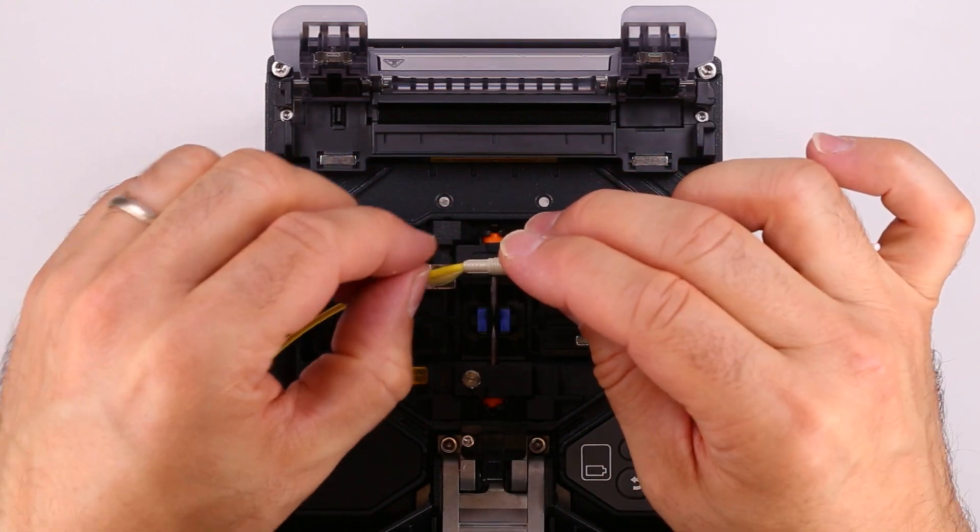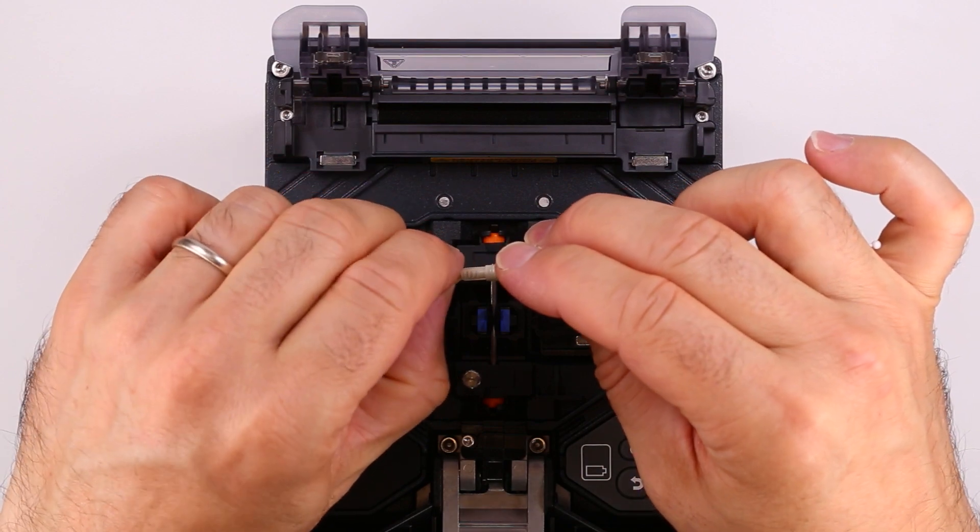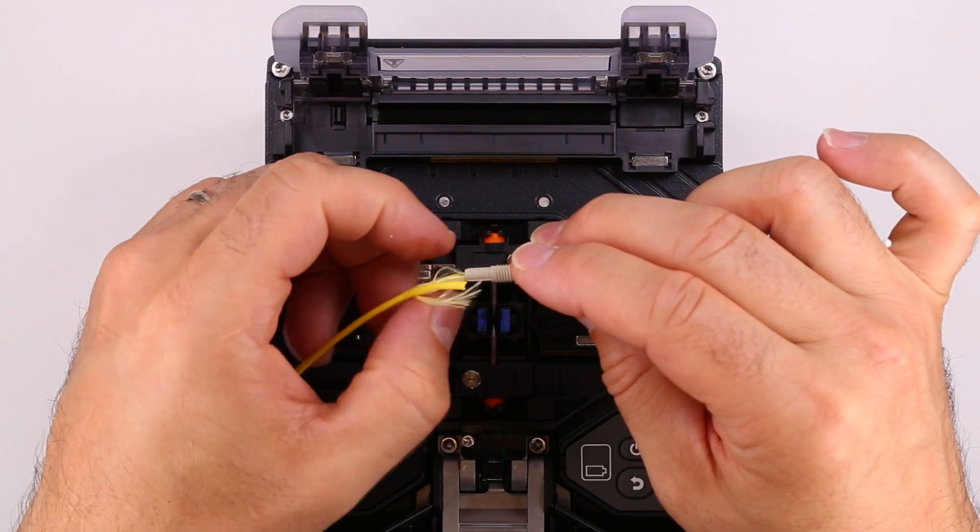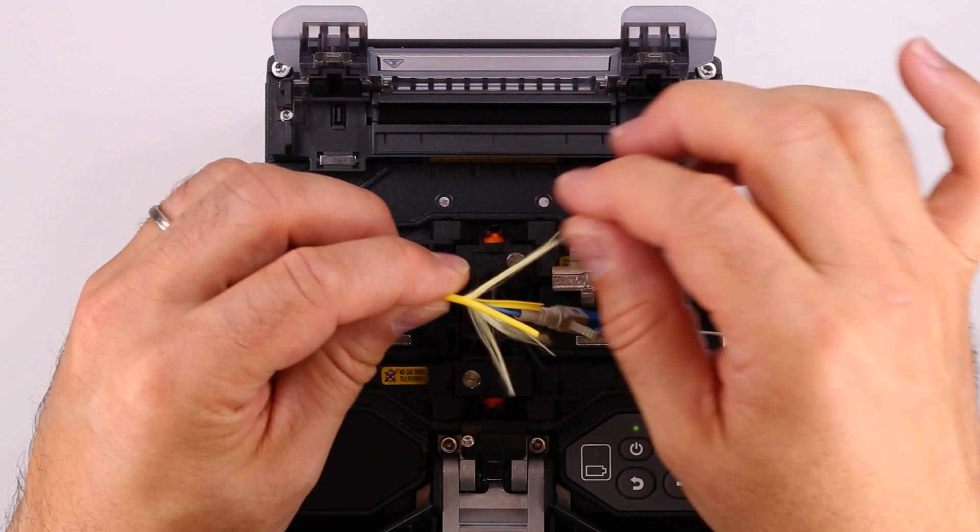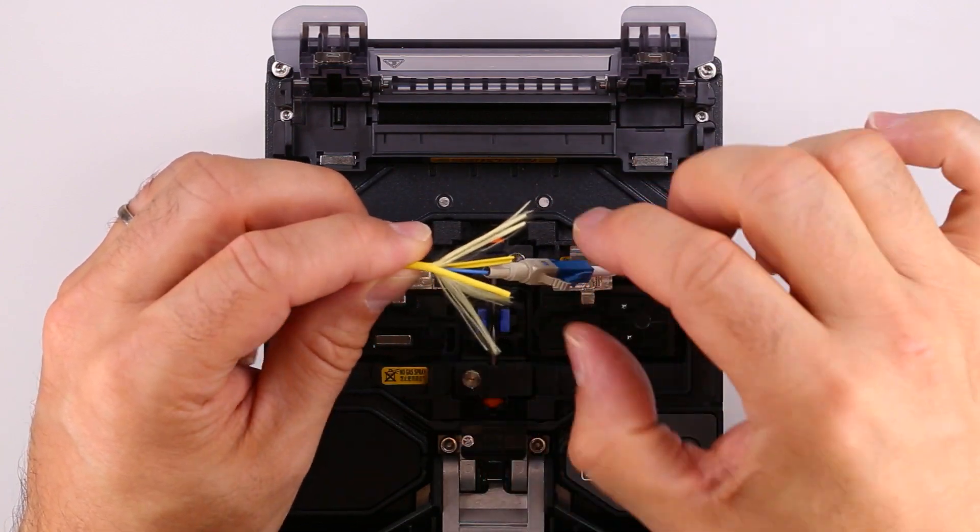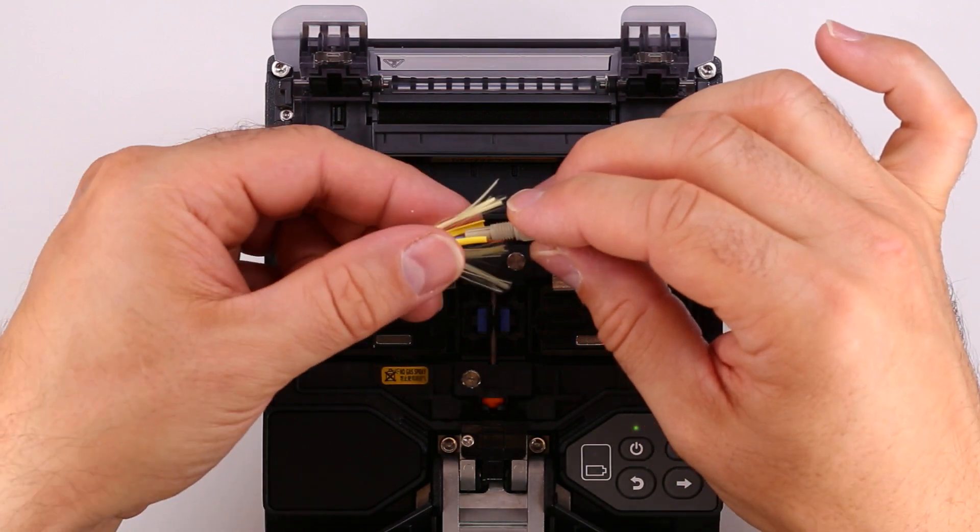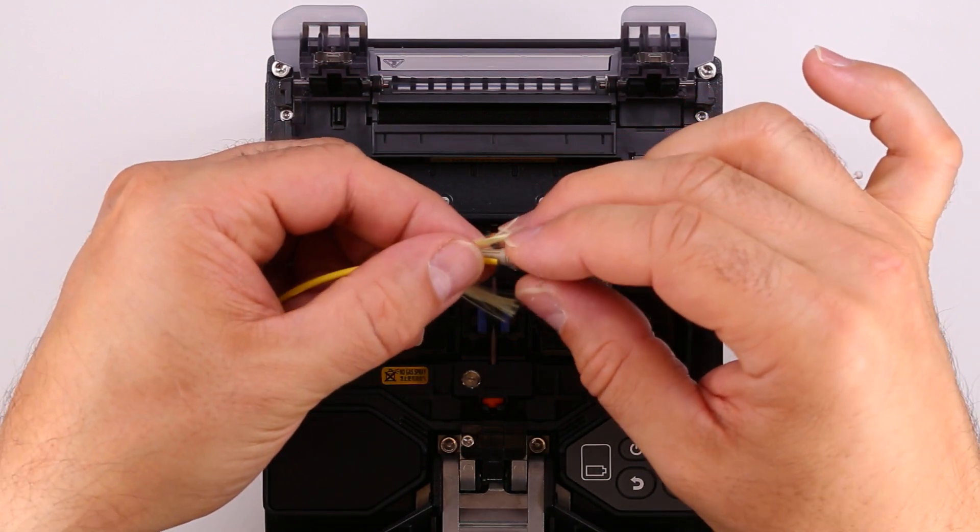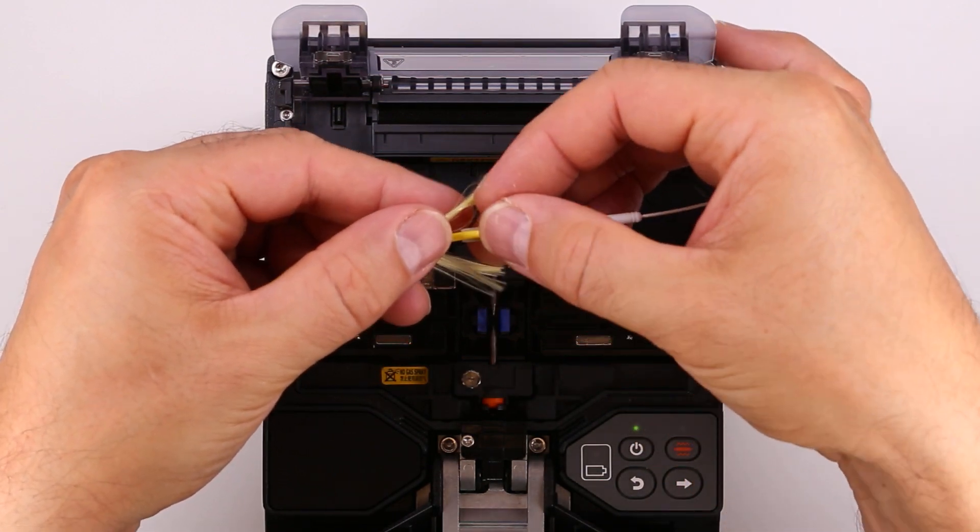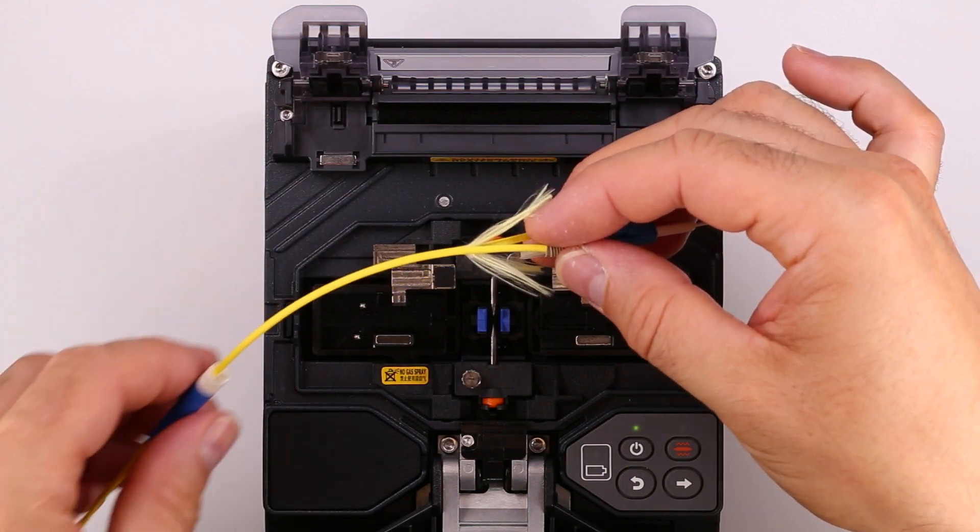Pull the aramid and jacket from the back of the rear body. Split the aramid into two groups that come out between the jacket halves. Place the two halves of the jacket on the barbs of the rear body and push the boot against the rear body.